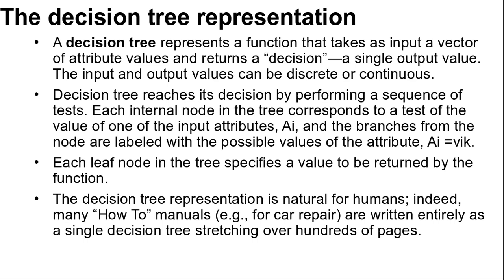And more example, we will build a decision tree to decide whether to wait for a table at a restaurant. The aim here is to learn a definition for the goal predicate: will wait. We have some list of attributes that we will consider as part of the inputs.